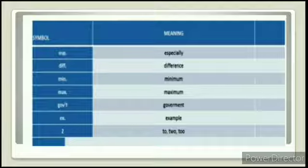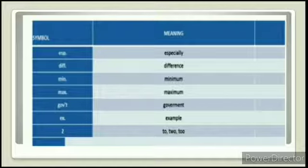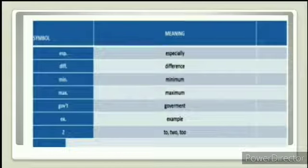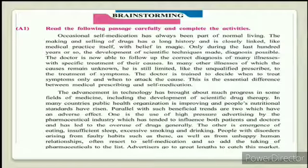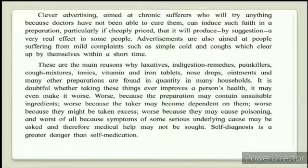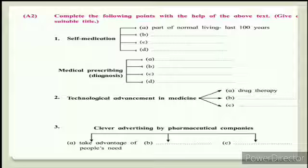We discussed the meaning, types of notes, format, and procedure for making notes. In your textbook, the passage is about Vata and Ayurvedic treatment. There are two brainstorming activities given: A1 is the unseen passage for you to read, and A2 is the activity to attempt. The passage in A2 is about self-medication and the medical field — read it properly and attempt the activity. Remember, do not use complete sentences; use only short forms, and underline the points you fill in as answers. I hope you enjoyed the lesson. Thank you.